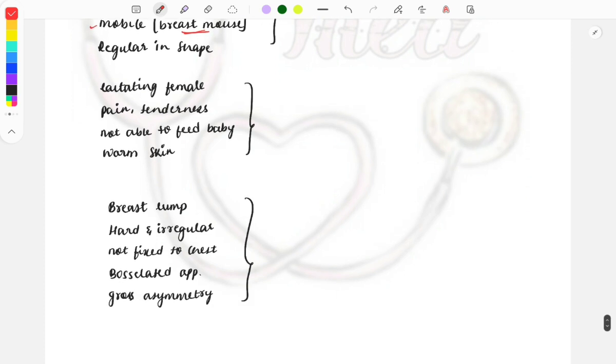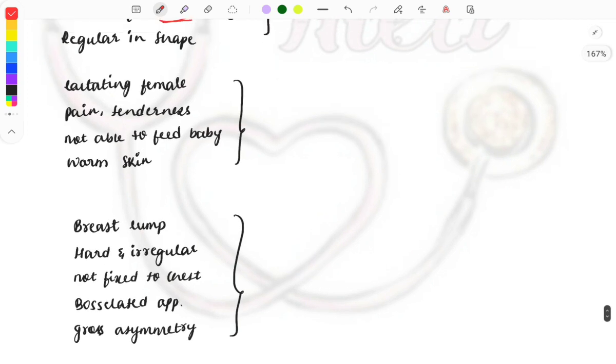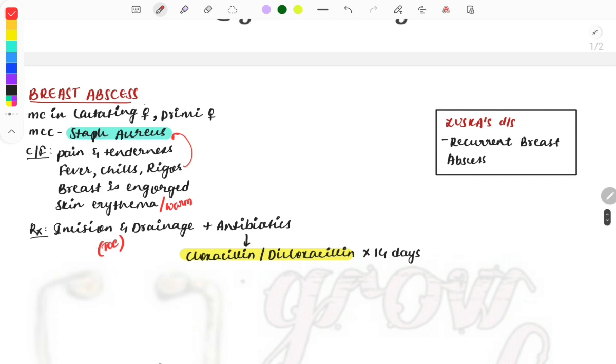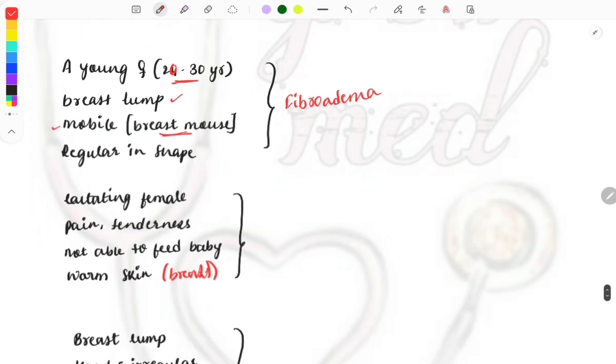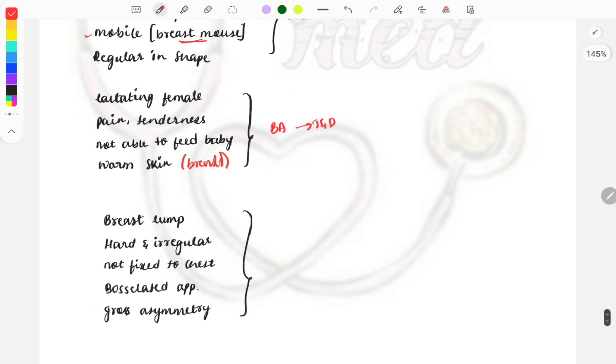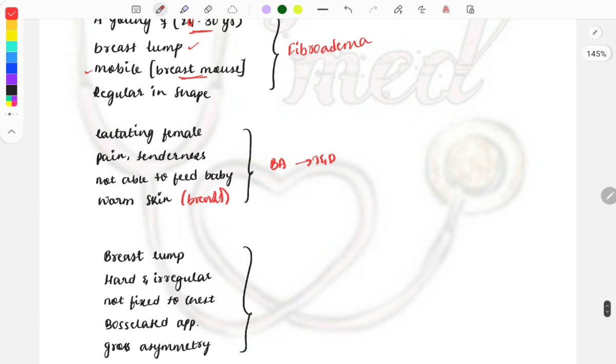Lactating female with pain, tenderness, unable to feed baby, and warm skin of the breast—this is breast abscess in a lactating female. Treatment: incision and drainage. Simple, right?